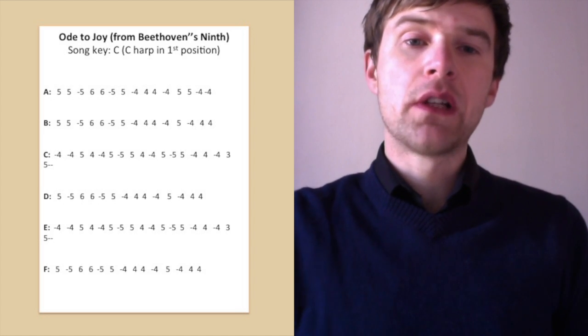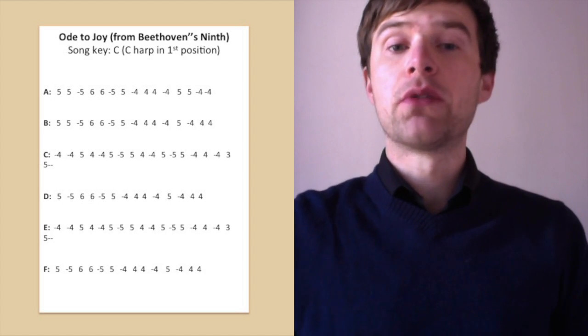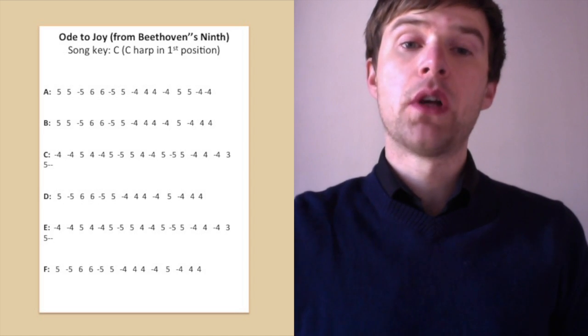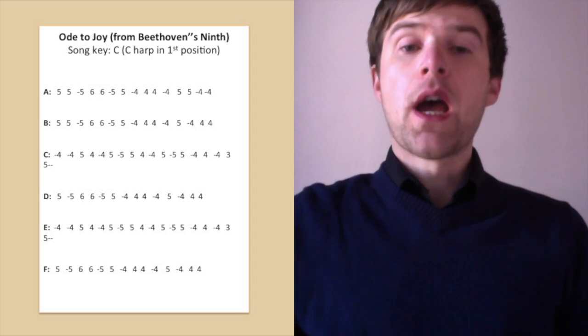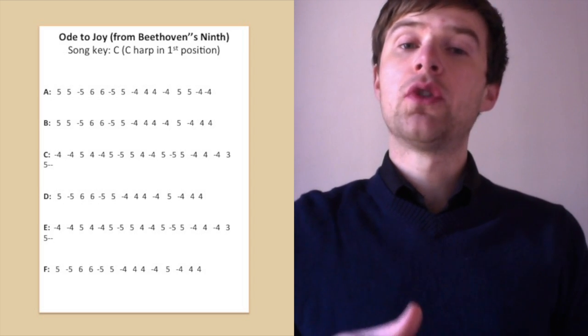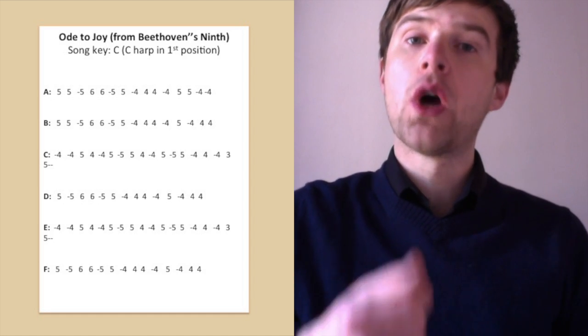The first part of the line is all the same. We've got five blow, five blow, five draw, six blow, six blow, five draw, five blow, and then we've got four draw, four blow, four blow. And then it starts to differ slightly. We've got four draw and five blow, but then we've got four draw, four blow, four blow.